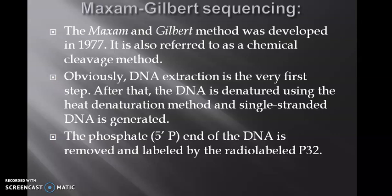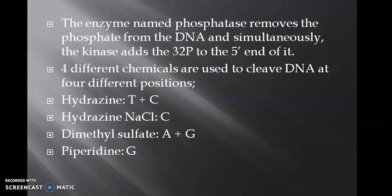The phosphate end of the DNA is removed and labeled by the radiolabel phosphorus. The enzyme named phosphatase removes the phosphate from the DNA and simultaneously the kinase adds the phosphate to the 5' end of it. Four different chemicals are used to cleave DNA at four different positions. Hydrazine and hydrazine with NaCl selectively attack pyrimidine nucleotides while dimethyl sulfate and piperidine attack purine nucleotides.